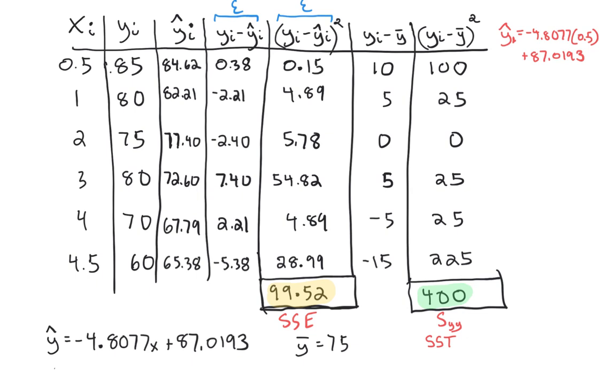Okay, now that we have those values, we can calculate our r squared. We'll calculate it in blue here over to the side. We have r squared is 1 minus SSE 99.52 over S-Y-Y, which is 400, and you can check that indeed we do get 0.7512.